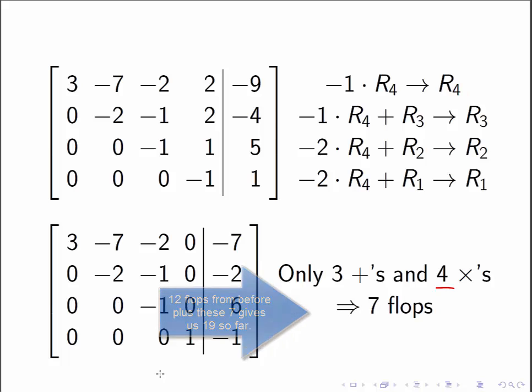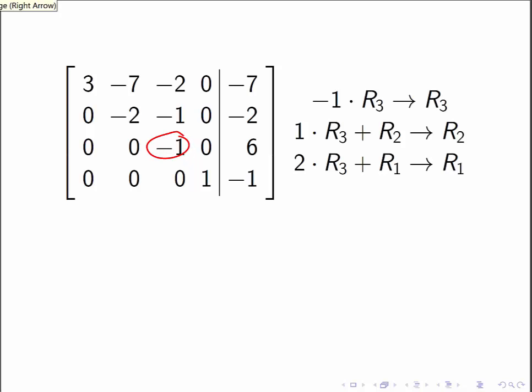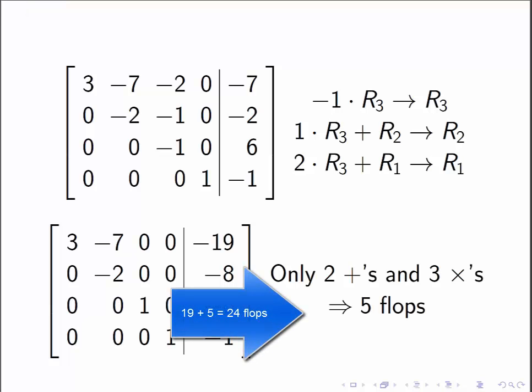Now I'm going to move over to the third column and put that into the correct form. I need to make this entry a one, so I'm going to start by doing negative one, row three is the new row three, and then the row operations that would be required to get zeros above that. Same thing. That is not going to affect the first two columns. It will affect these two entries. And so the result that I get is here. I have done in that set, I only did five floating point operations.